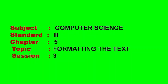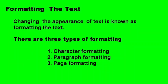Good morning students, welcome to online computer science class, standard 3, chapter 5, topic: formatting the text, session 3. In this class we will learn about formatting the text. The changing the appearance of text is known as formatting the text. There are three types of formatting: the first one is character formatting, the second one is paragraph formatting, and the third one is page formatting.